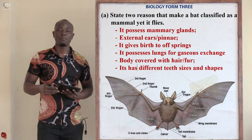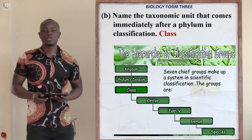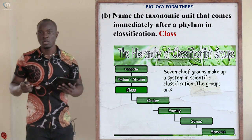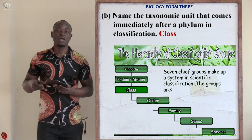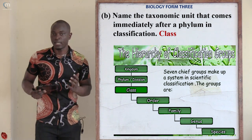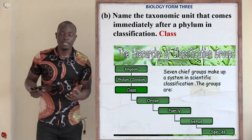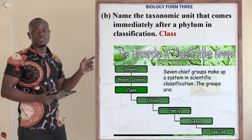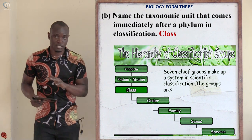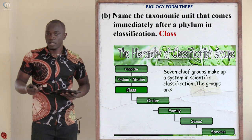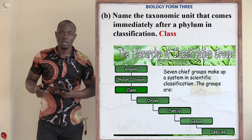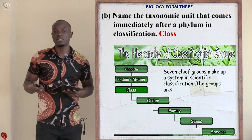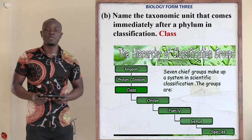Question letter B asks: name the taxonomic unit that comes immediately after phylum in classification. The answer is class — class comes immediately after phylum and division. Looking at the hierarchy of classification, it begins from kingdom and ends with species. In an exam, if asked to list the hierarchy, you must list from the largest to the smallest, or from smallest to largest if specified.